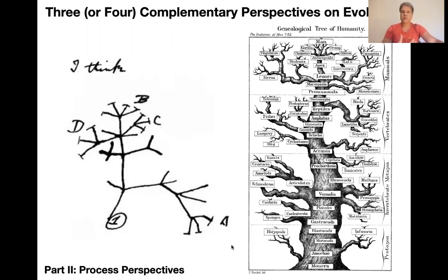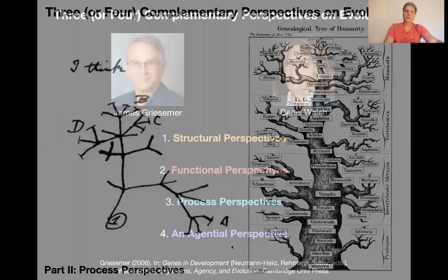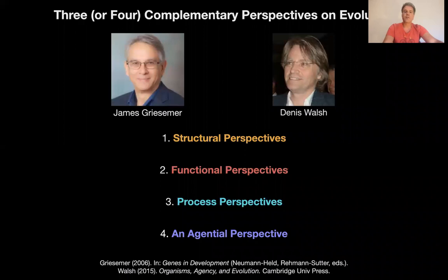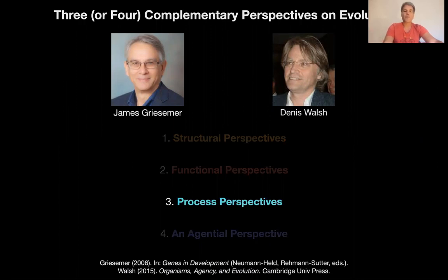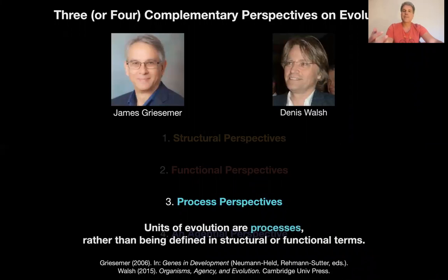We also discussed some of the blind spots that these theories have. One of the main blind spots is that what is actually evolving are processes — ontogenetic processes that form the life cycle of the organism. So ultimately, evolution is the evolution of the life cycle. Today we're going to look at two process-based perspectives that take this as their central focus, moving from structural perspectives and functional perspectives toward a perspective on evolving processes.